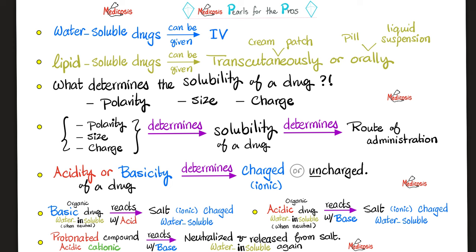If you have a compound that is protonated — meaning it has lots of protons, is acidic, and is a cation (a positive ion) — if you react it with a base, you will neutralize it and release it from its salt, making it water insoluble again. This is how pharmaceutical companies can manipulate these medications just by understanding chemistry. A doctor who does not know chemistry is like a butcher who does not have a knife.